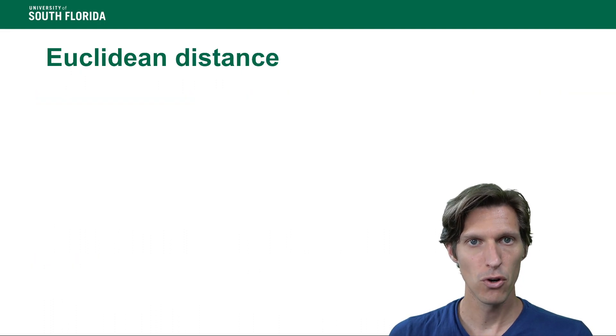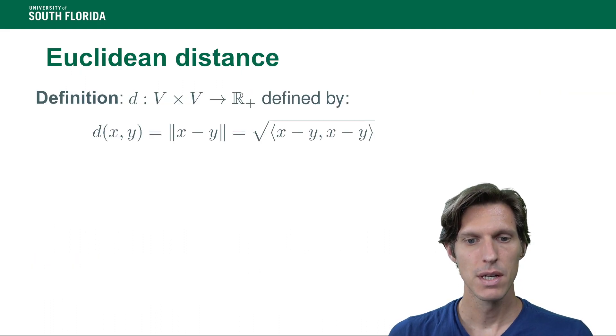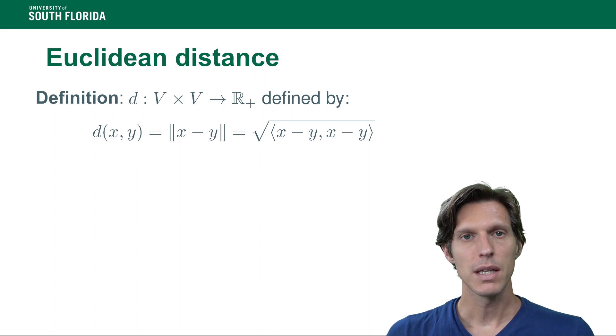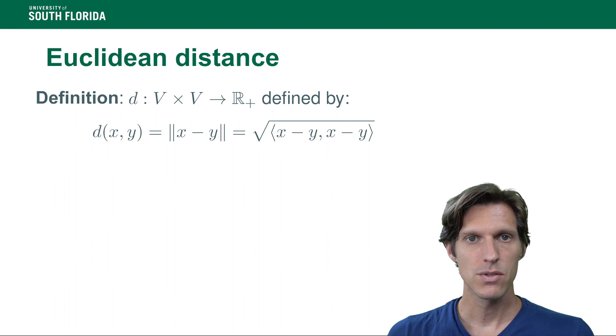Now from the norm we define a Euclidean distance d: V × V → ℝ, defined by d(x,y) = ||x - y||.